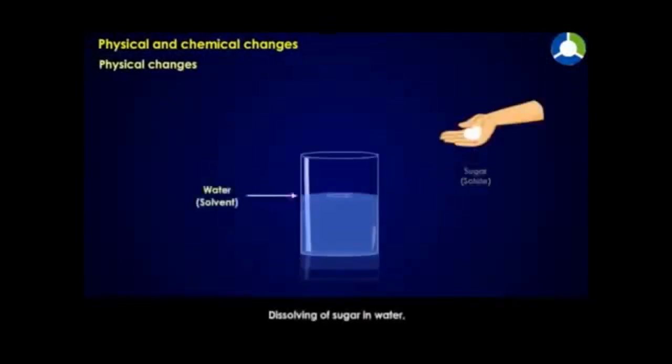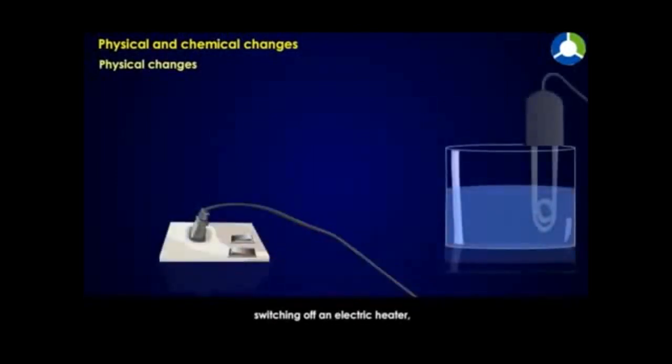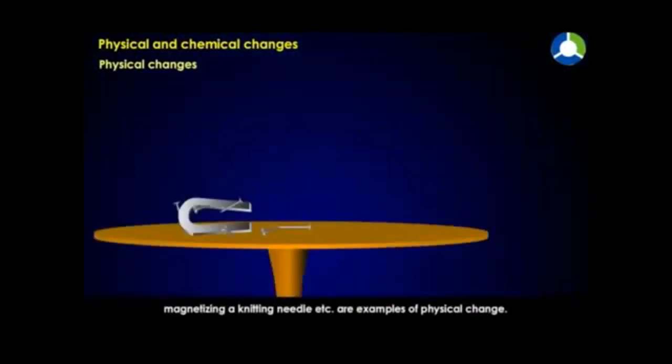Physical and Chemical Changes. Physical Changes. A physical change is a temporary change. Dissolving of sugar in water, switching off an electric heater, magnetizing a knitting needle, etc. are examples of physical change.